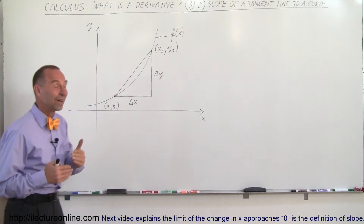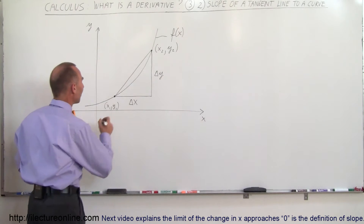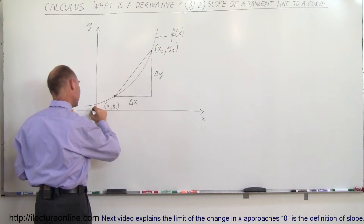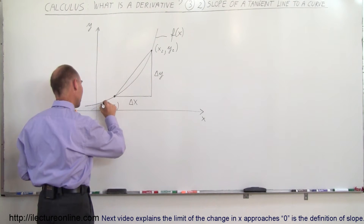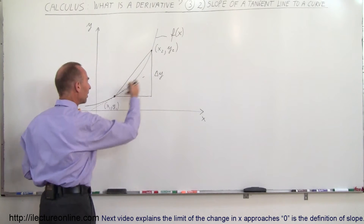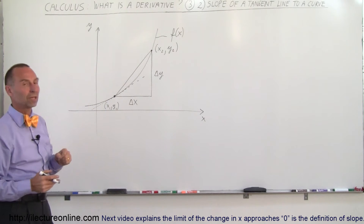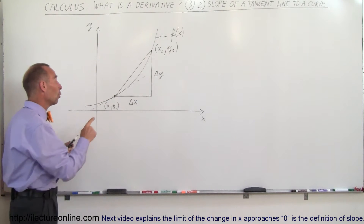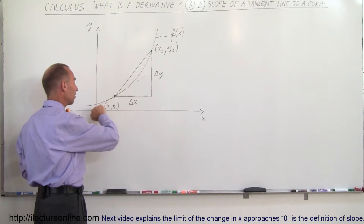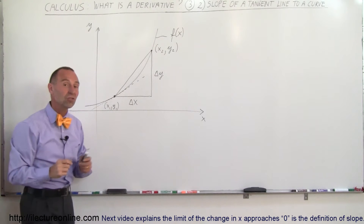So now what we're trying to find is the tangent line to a curve. Let's say that I want to find the tangent line along the curve at this particular point. The dotted line represents the tangent line to the curve at that point. So if I want to know what my derivative is at this point, I simply have to find the slope of that tangent line.